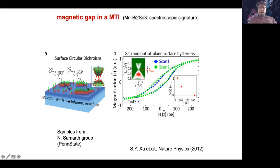One approach: if you observe a gap on a sample, do a dichroic experiment — circular dichroism — and see whether there is a dichroic signal, whether there is hysteresis on the sample, and whether this magnetization disappears at higher temperature with the gap also closing. These are first-order diagnostics, but in some samples even more subtle diagnostics are needed.